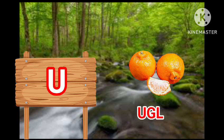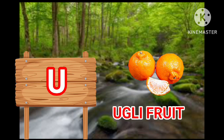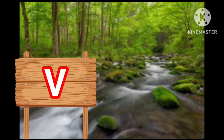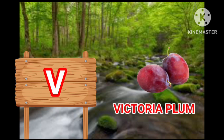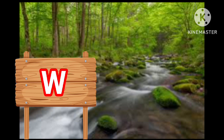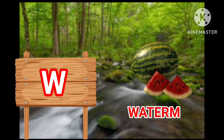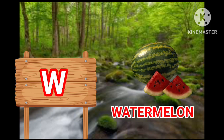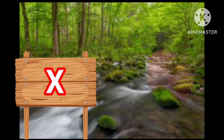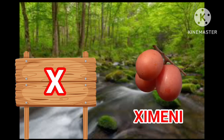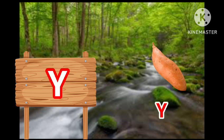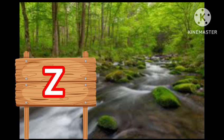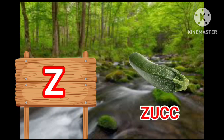U for Ugly Fruit, V for Victoria Plum, W for Watermelon, X for Jimenia, Y for Yum, Z for Jukini.